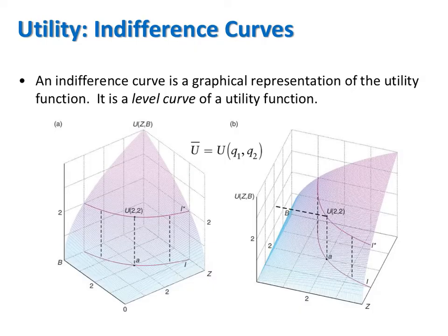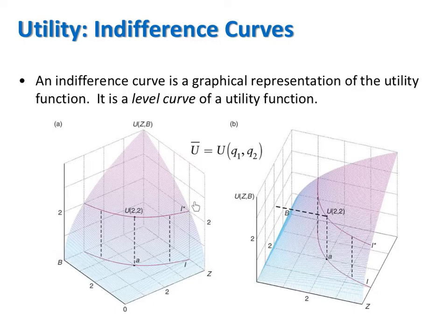When utility is a function of two goods, we could graph utility functions in a three-dimensional space. On one axis we would have utils, on a second axis one good, and on the third axis the second good. An indifference curve is going to take a slice of this utility function, where the slice is at some specific value of utility. An indifference curve is a utility function graphed for one specific value of utility.